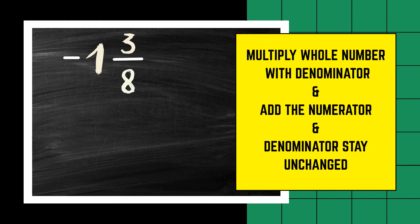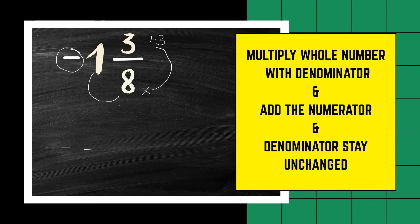Can you spot the difference with this mixed number from the previous one? This mixed number has a negative value. Because the value is negative, the solution at the end should also be negative. We still do exactly the same operations. We would say 1 times 8 plus 3 and leave the denominator unchanged. 1 times 8 is 8 plus 3 is 11 over 8.